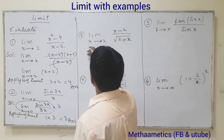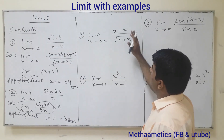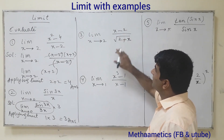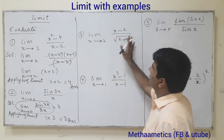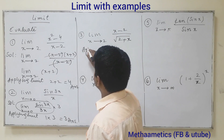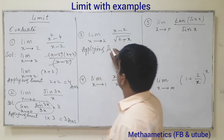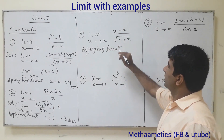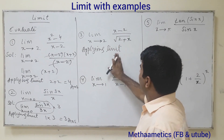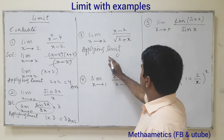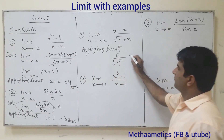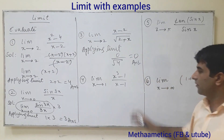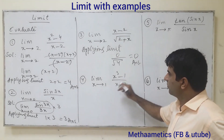Question 3: In this example, we have to do nothing special — we can directly put the value. It looks difficult but it's very easy. Applying the limit directly, we get 2 plus 2 equal to 4 in the numerator, and 0 upon square root of 4, which gives us 0. That's the answer.